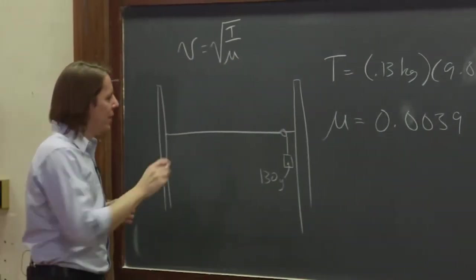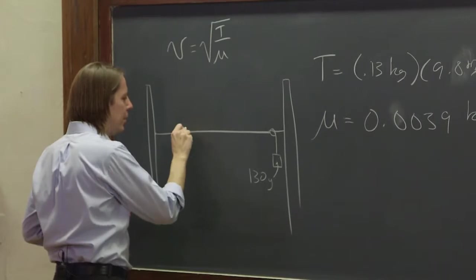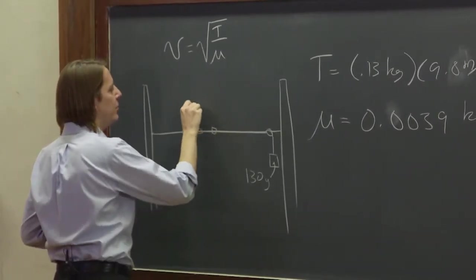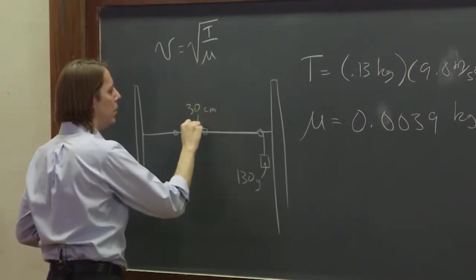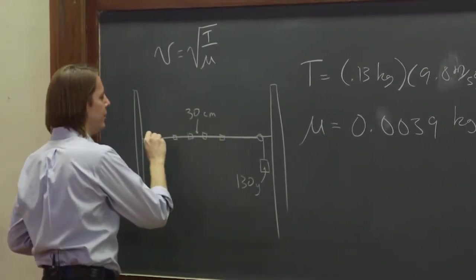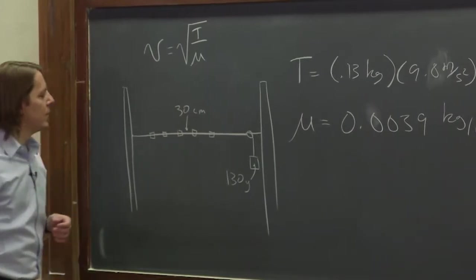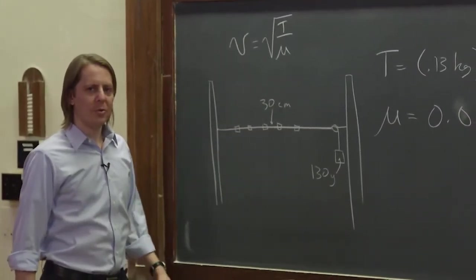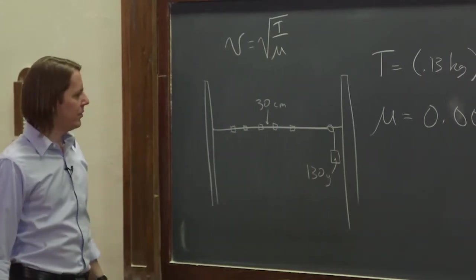I've also put little flags on here, and they're spaced every 30 centimeters. There are five. You're going to be able to use that to see how fast the wave pulse goes by. Have a look at the string and see what I'm talking about.